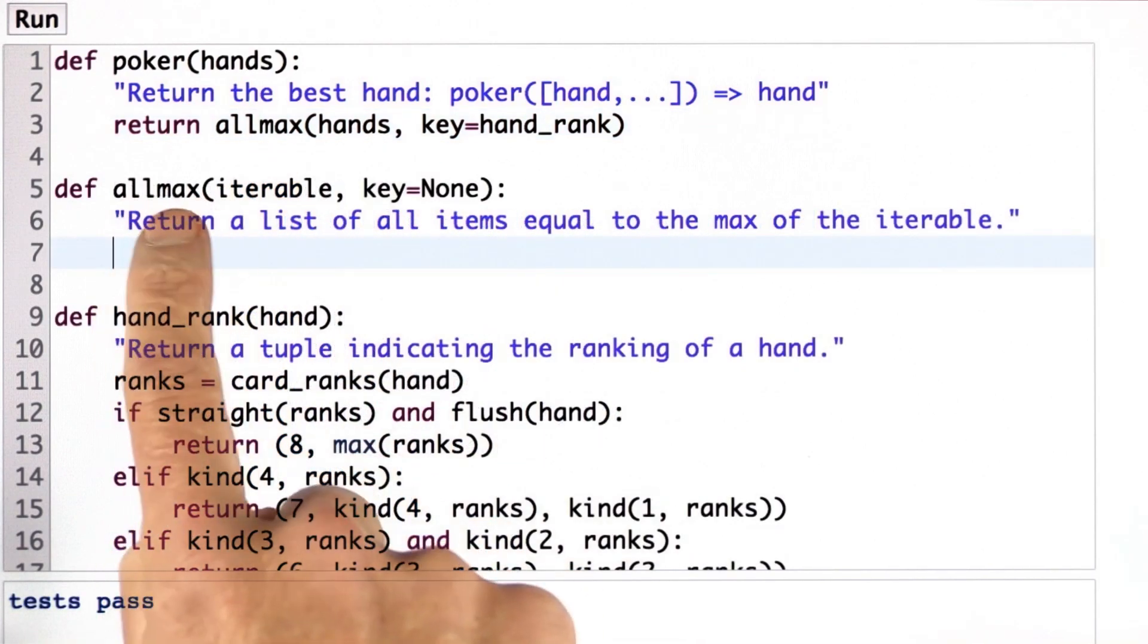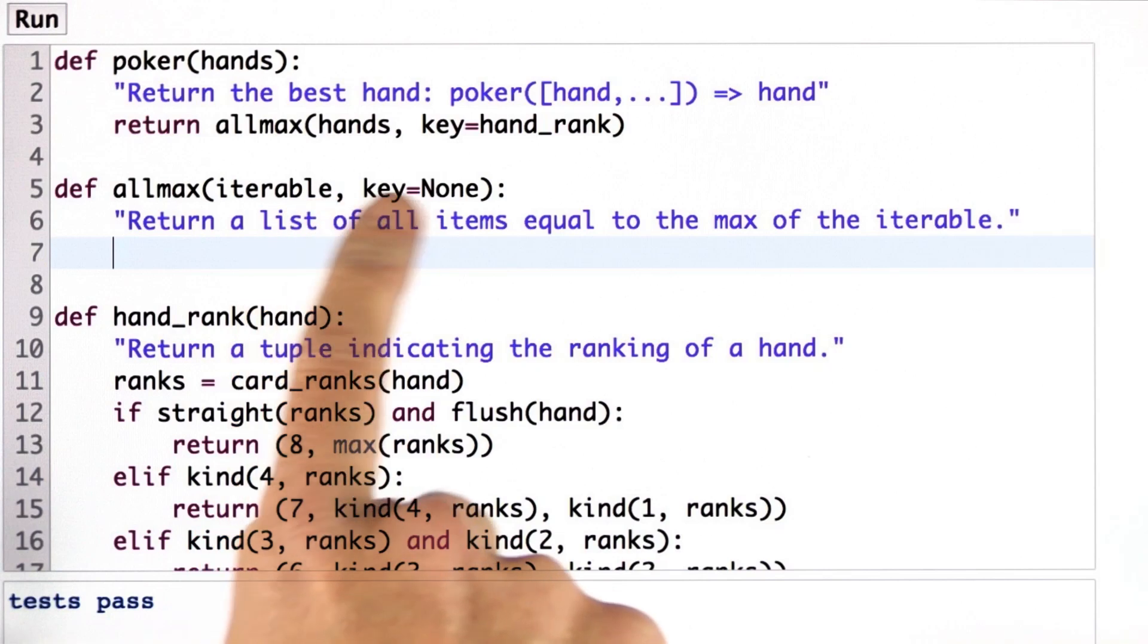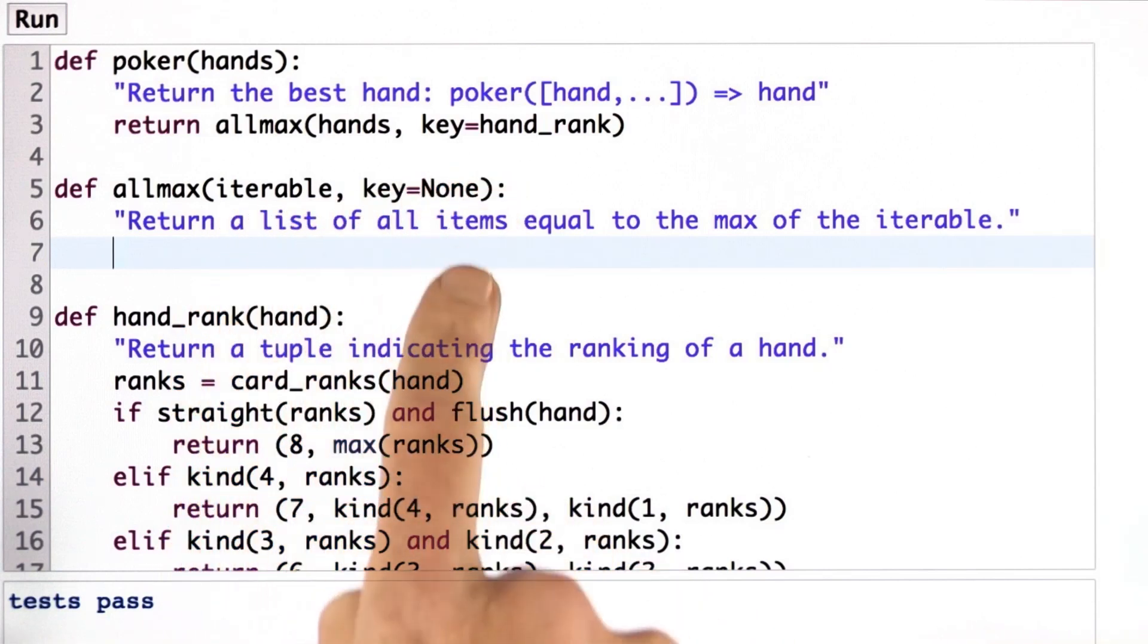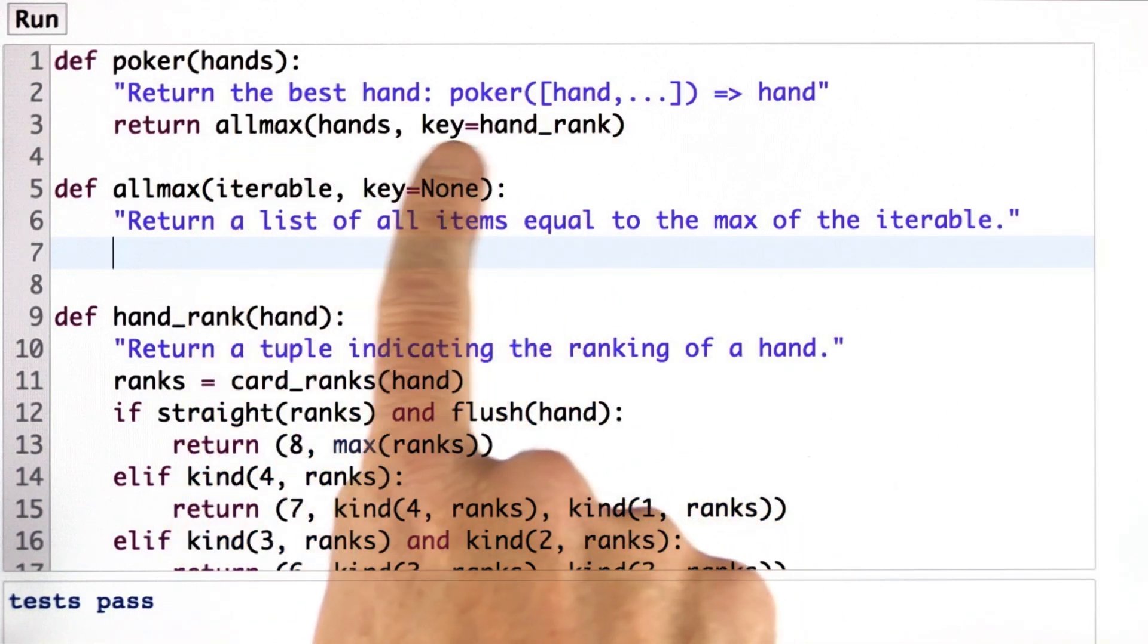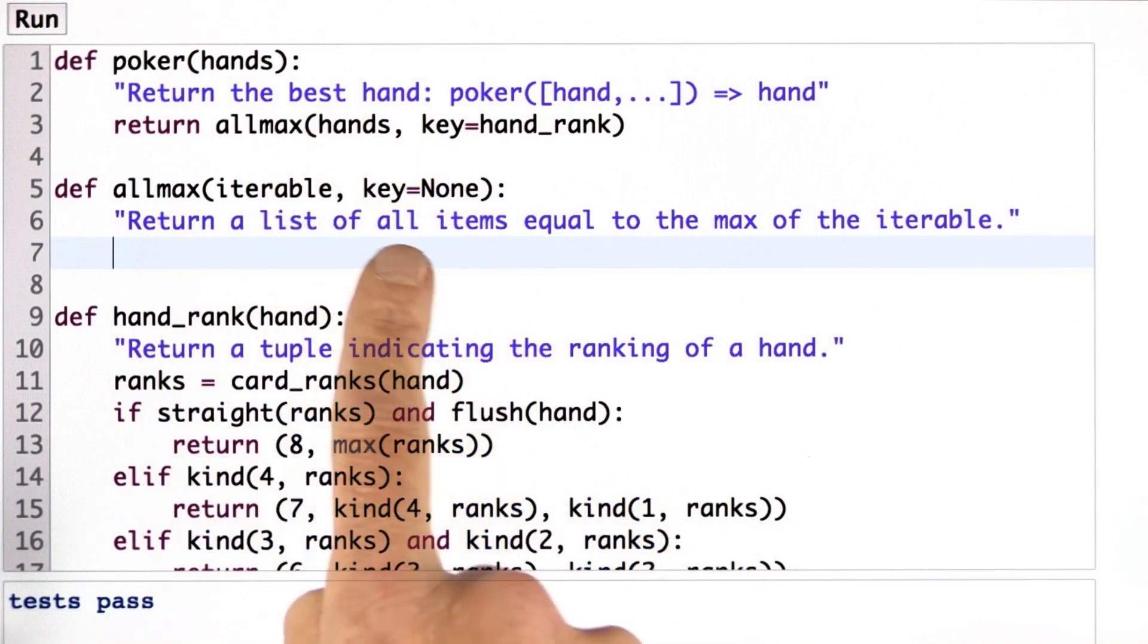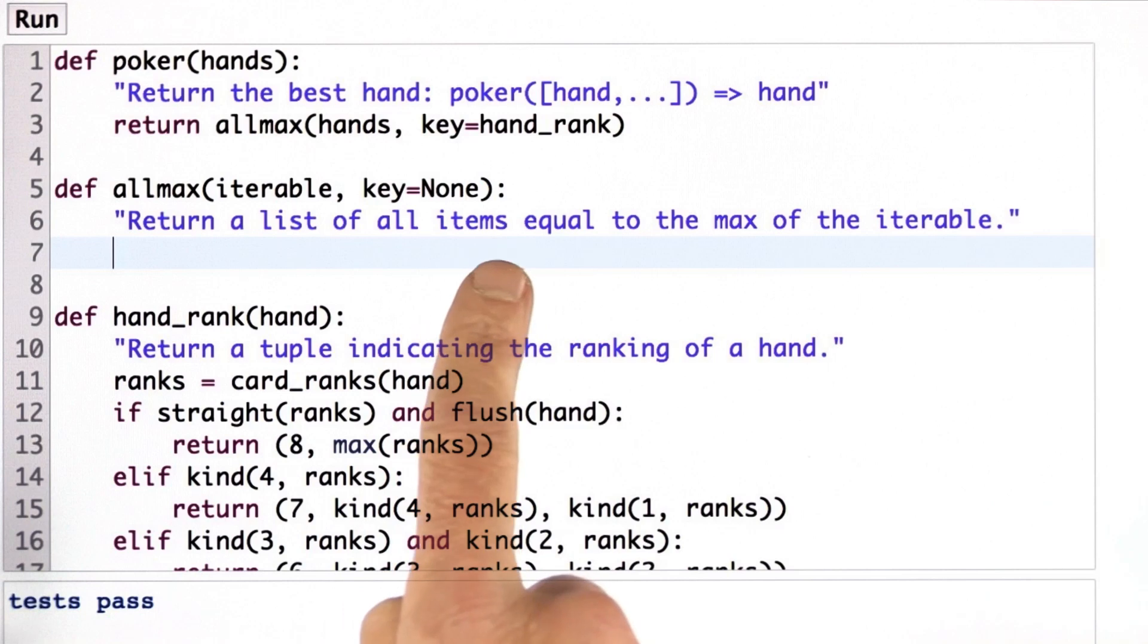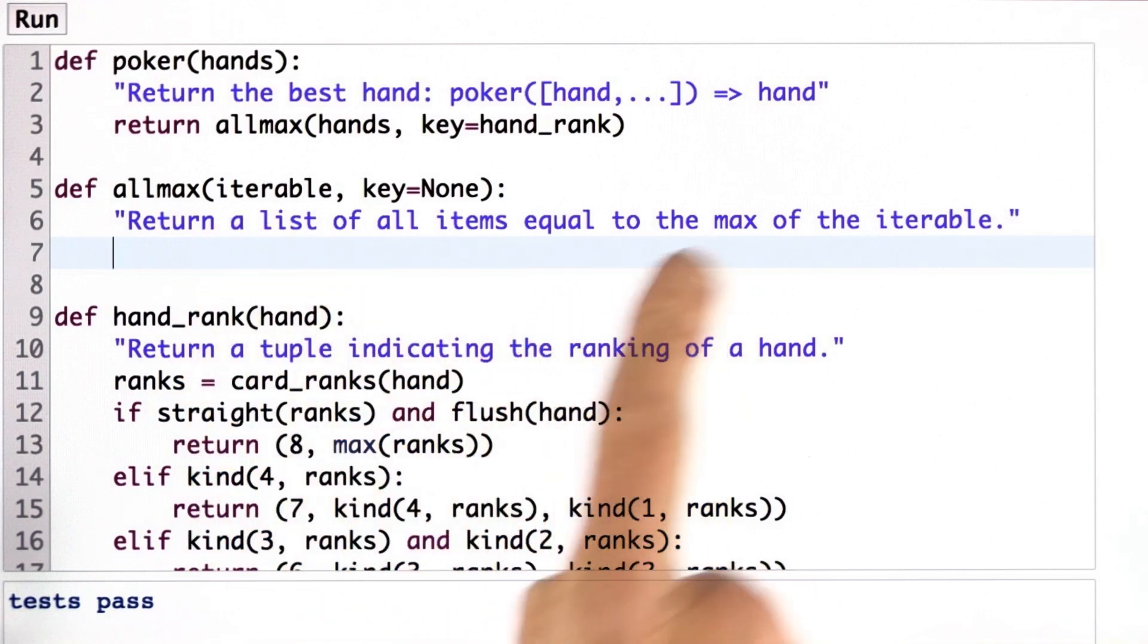And now let's have you write the function all max. So it takes an input, which is a list or something else that you can iterate over. Python uses the word iterable to refer to that. And it optionally takes a keyword argument just the way that max did. Max can take a key or not. And what we want to do is return, and let's make a commitment and say we're going to return a list of all the items in the iterable that are equal to the max of the iterable.